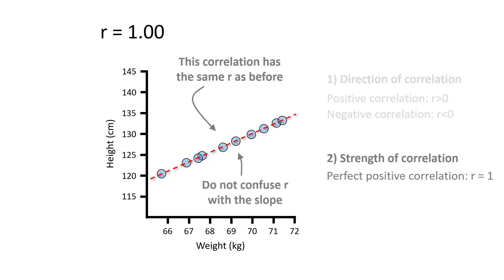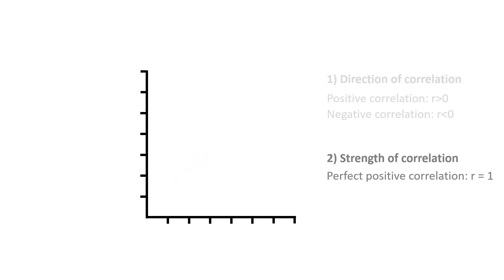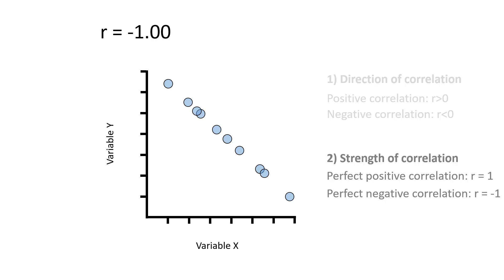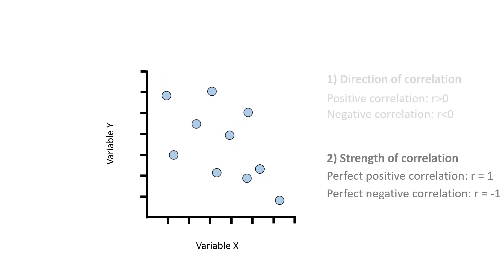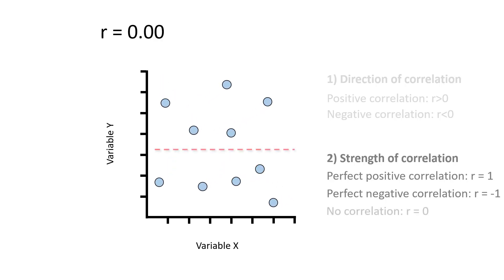Here is the relationship between two other variables that has a correlation coefficient value of negative 1. This indicates a perfectly negative association between variables x and y. Similarly, if I drew a line of best fit, see how this passes through all points perfectly. And a value of 0 indicates no correlation at all between the variables x and y.